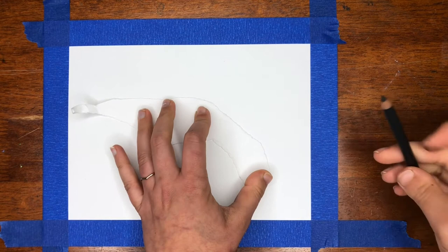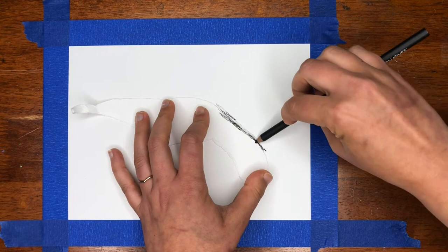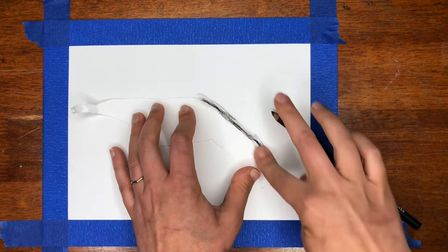Once you have your tape down, now we can take our paper and we can start to do our rubbing. I'm going to hold my pencil more at the side. I'm just following this edge. Now I could use my finger. I don't have to use the pencil the whole time.